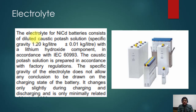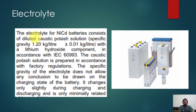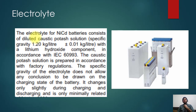Now for nickel-cadmium batteries: the electrolyte consists of a dilute caustic potash solution with a specific gravity of 1.2 kg per liter plus or minus, with a lithium hydroxide component in accordance with IEC 6993. The caustic potash solution is prepared according to factory regulations. Importantly, the specific gravity of the electrolyte does not allow any conclusion about the charging state of the battery — it changes only slightly during charging and discharging. This is different from lead-acid batteries, where specific gravity increases with charge.